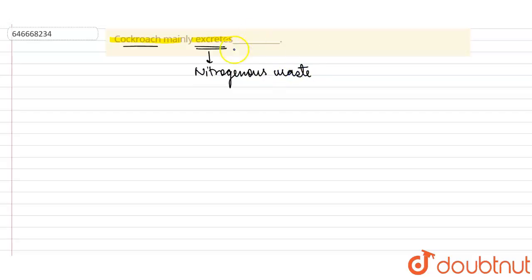So the nitrogenous waste which is being excreted by the cockroach is basically known as uric acid. Uric acid is a moderately toxic nitrogenous waste which is released by cockroach, and as it releases uric acid, it is considered a uricotelic organism.